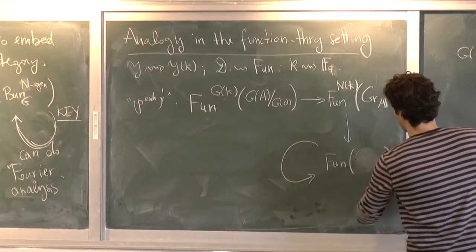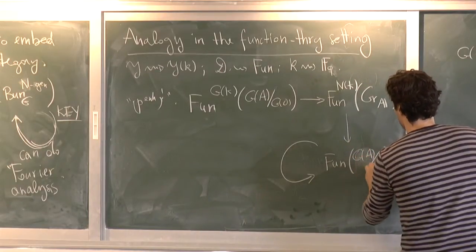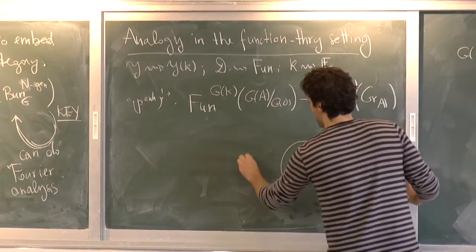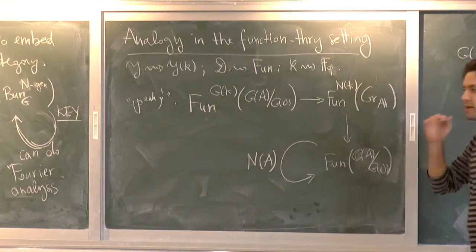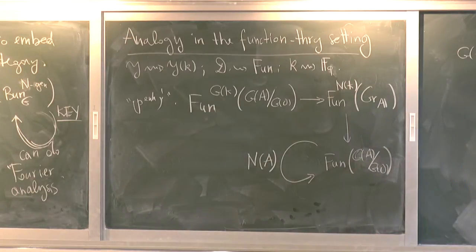And what's nice about this is that I get an action. Well, let me write it again as a quotient. I get an action by N of A, N of the adeles.